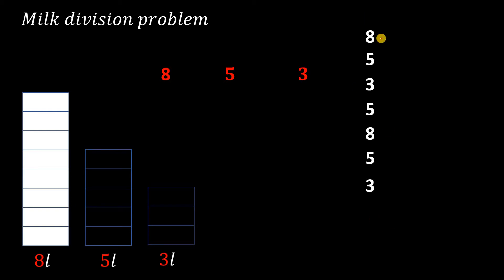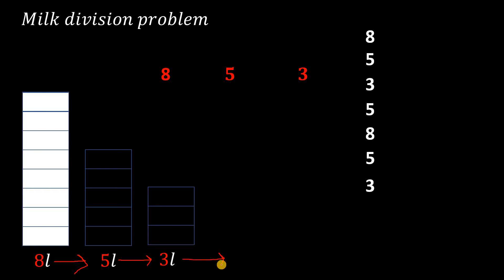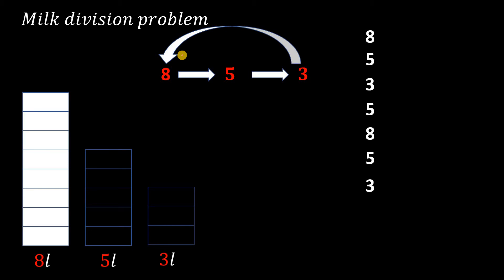The next concept to understand is that you can only pour the milk into the jar that is on the right side of the current jar. For example, the five-liter jar is on the right side of the eight-liter jar, so you can pour from the eight-liter jar into the five-liter jar. You cannot pour from the eight-liter jar directly into the three-liter jar because it is not exactly on the right side. Similarly, you can pour from the five-liter jar into the three-liter jar. Since there is no jar on the right side of the three-liter jar, you can pour from the three-liter jar back into the eight-liter jar.